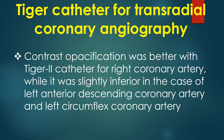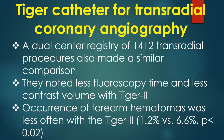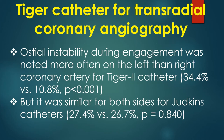Contrast opacification was better with the TIGER II catheter for the right coronary artery, while it was slightly inferior for the left anterior descending and left circumflex coronary arteries. A dual-centre registry of 1412 transradial procedures made a similar comparison, noting less fluoroscopy time and less contrast volume with TIGER II. Occurrence of forearm hematomas was also less frequent with TIGER II. Hemodynamic instability during engagement was noted more often on the left than the right coronary artery for TIGER II, but was similar for both sides with Jutkins catheters.